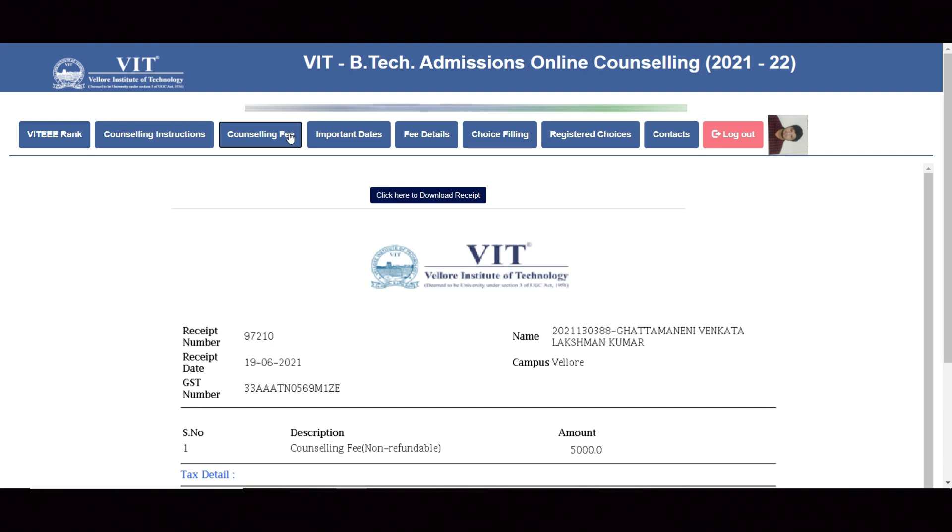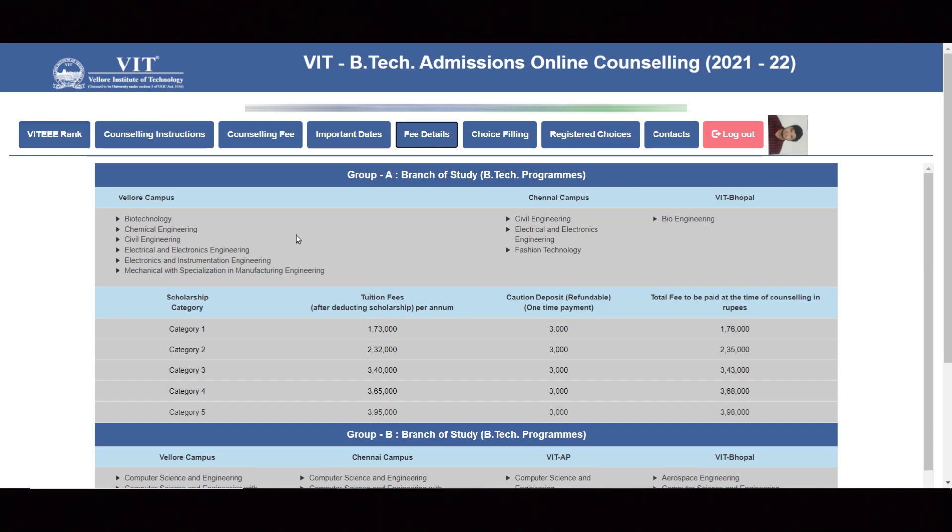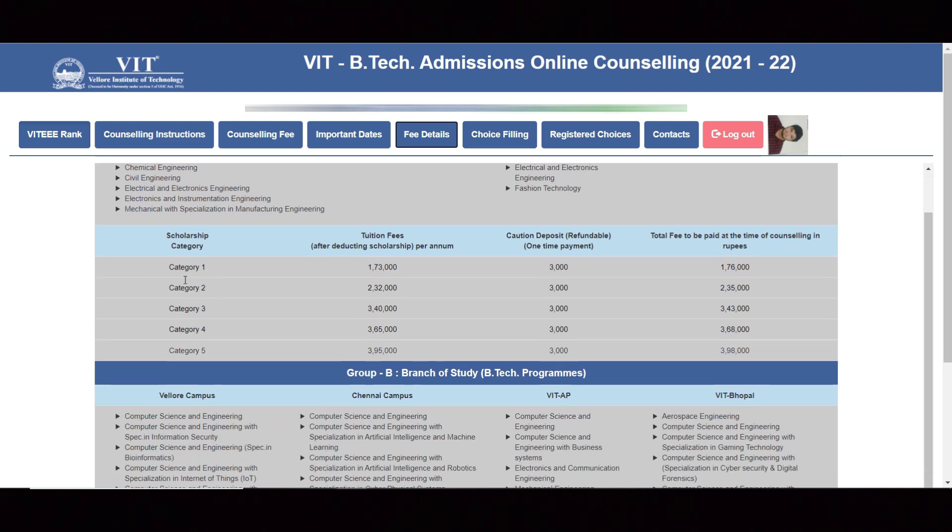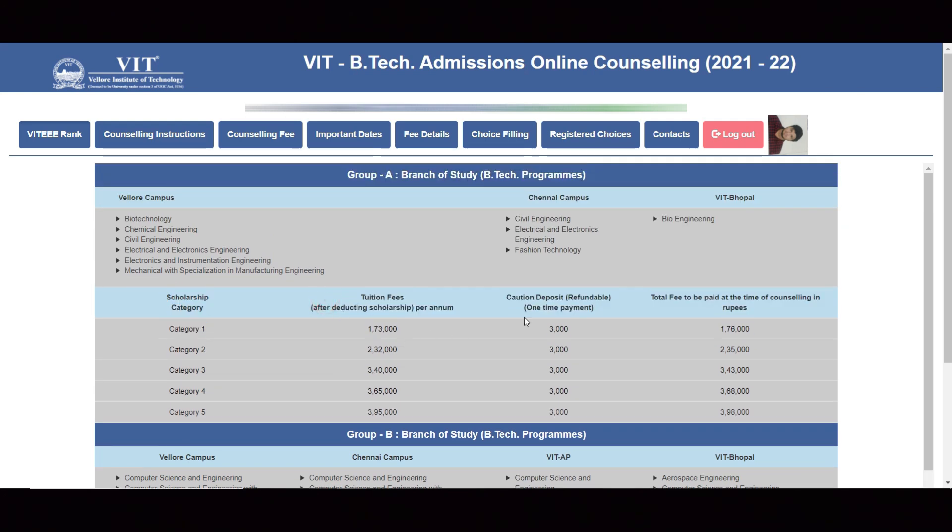For fee details, they have mentioned everything. Vellore campus programs - these are Group A. Chennai campus these branches and Bhopal these branches. These are the scholarship categories. The tuition fee is 1,73,000 and cost enterprise is 3,000. This is Group A fee details.